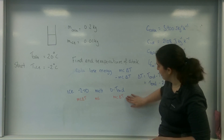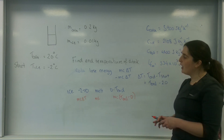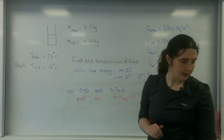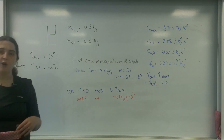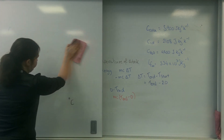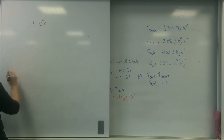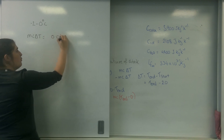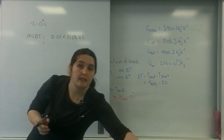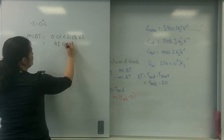For that last stage, delta T is going to be T-end minus 0. The energy that the ice gained is exactly equal to the energy that the cola lost. Let's work out the energy the ice gained. Stage one — ice going from minus 2 to 0 — is MC delta T: 0.01 times 2108 times 2, which equals 42.16 joules.